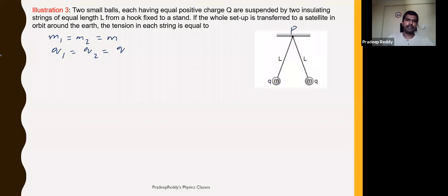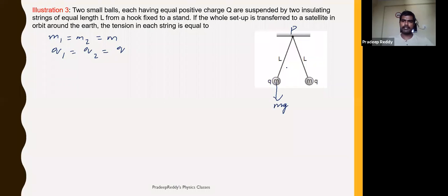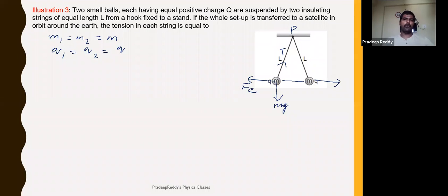Generally, if you are dealing with these charges on the Earth's surface, there will be a gravitational force acting in the downward direction, and that gravitational force is Mg. There will be tension within the string, and between the two charges there will be a repulsive electrostatic force acting outward, which I am representing as Fe.